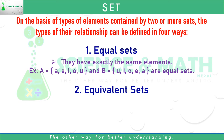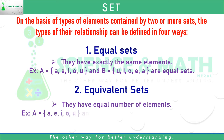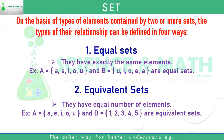Number two: equivalent sets. Equivalent sets have equal number of elements. For example, A equals the set of A, E, I, O, U and B equals the set of 1, 2, 3, 4, 5. Here, the number of elements in set A is 5 and number of elements in set B is also 5. Since the number of elements in set A and set B are equal, they are called equivalent sets.